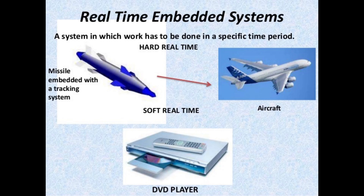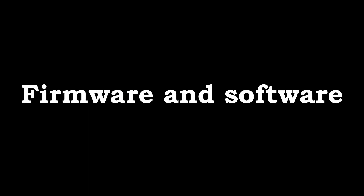Real-time operation: Many embedded systems operate in real time, which means they must respond to external events within specific time constraints. Real-time systems are classified as hard real-time, with strict timing constraints, or soft real-time, with less strict timing constraints. Timing analysis and scheduling algorithms are used to ensure that tasks are executed within their deadlines.